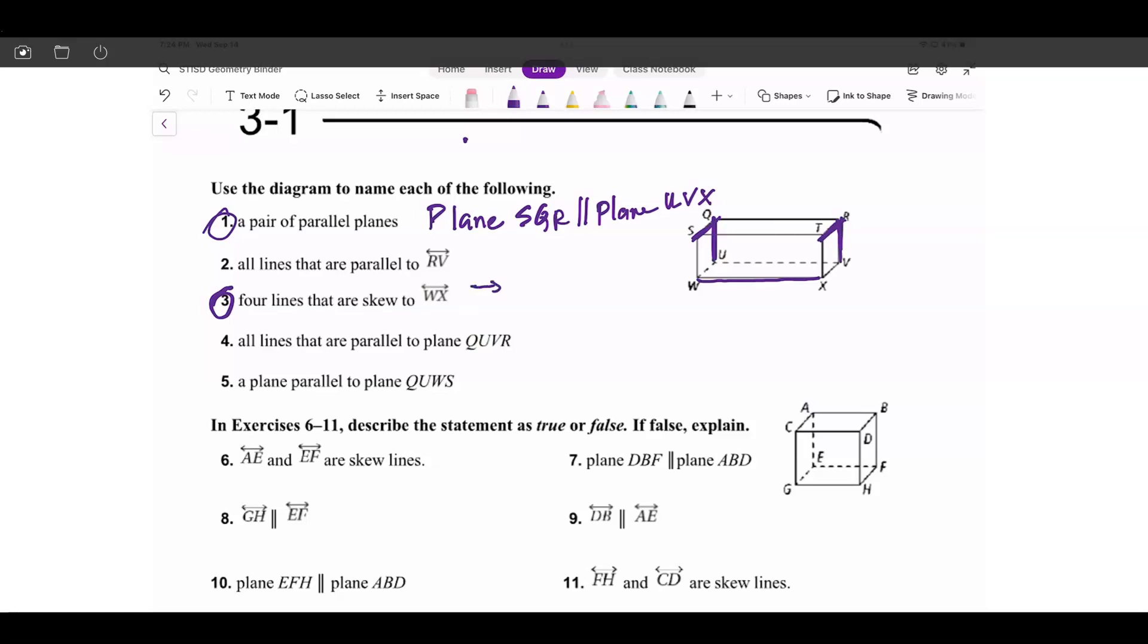You need to make sure that you have the symbol correctly. So it's line SQ, line QU, line TR, and line RV. So those are the ones that are skew. In other words, they appear to be intersecting from the top view, but they're not.